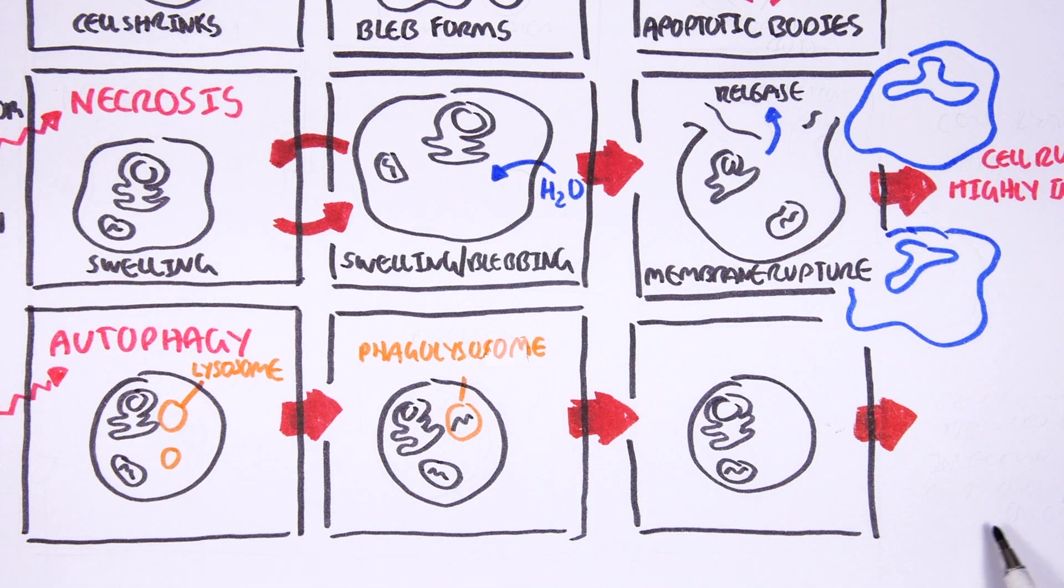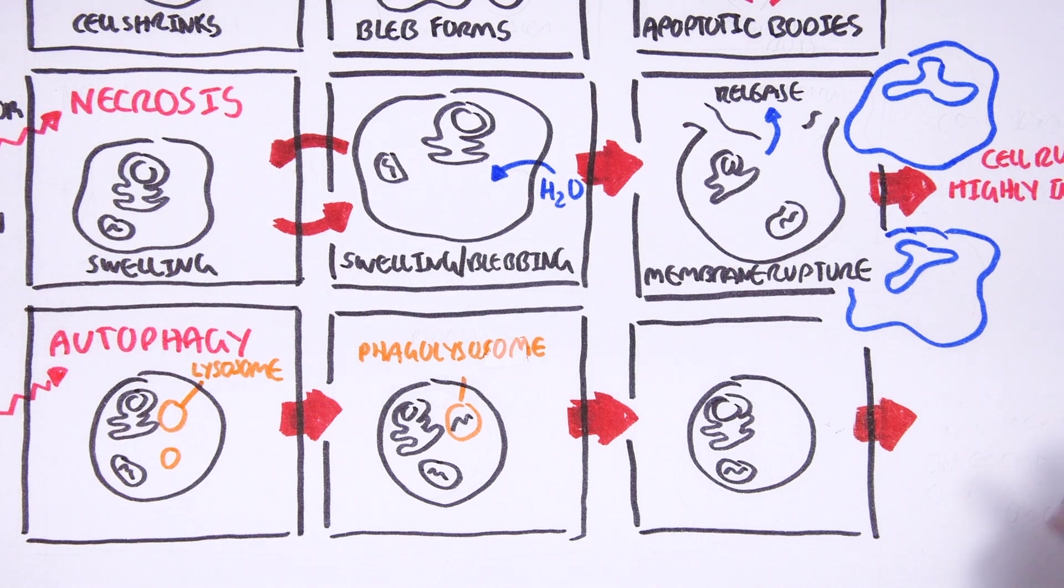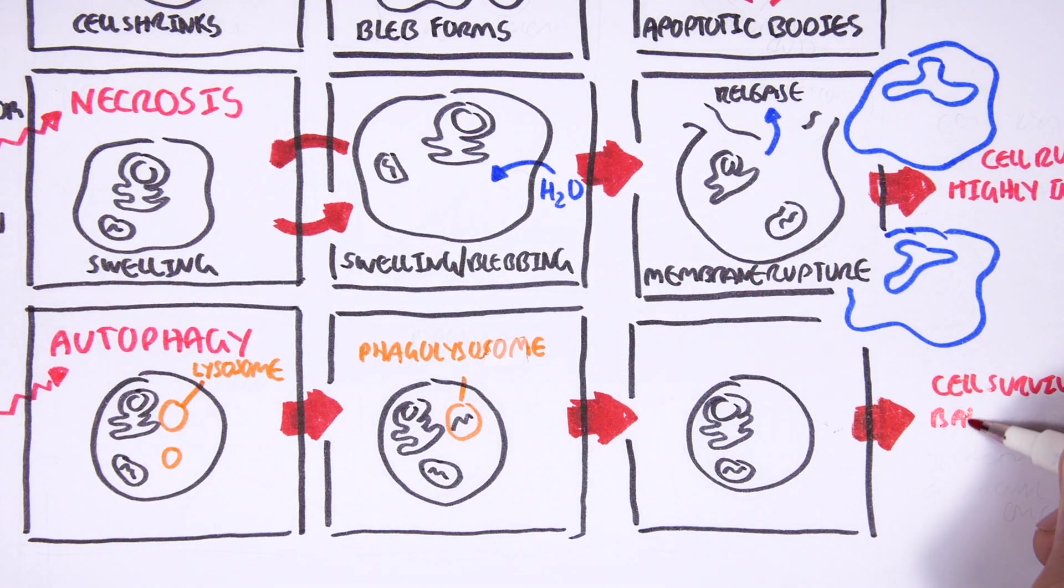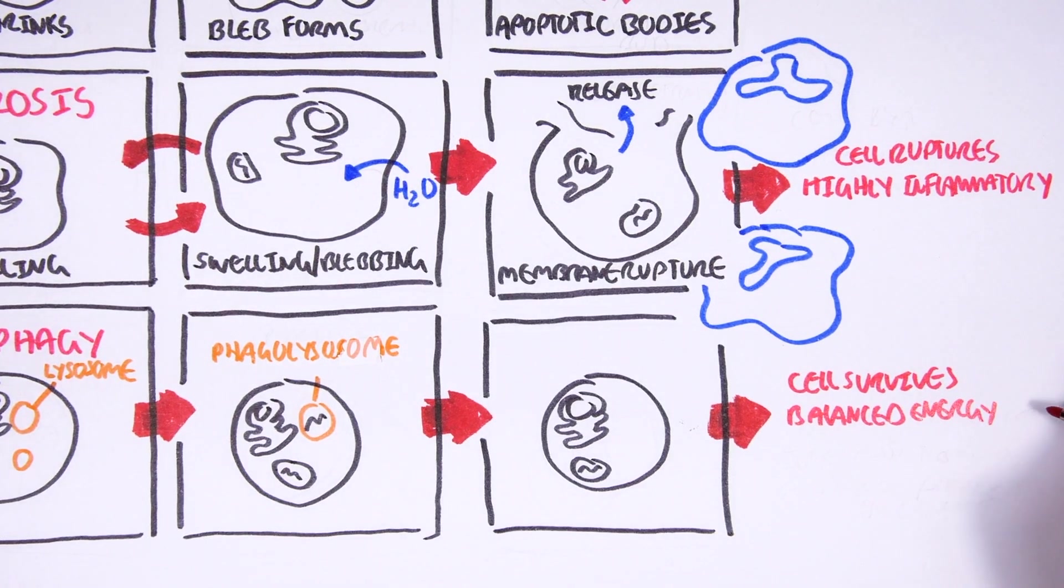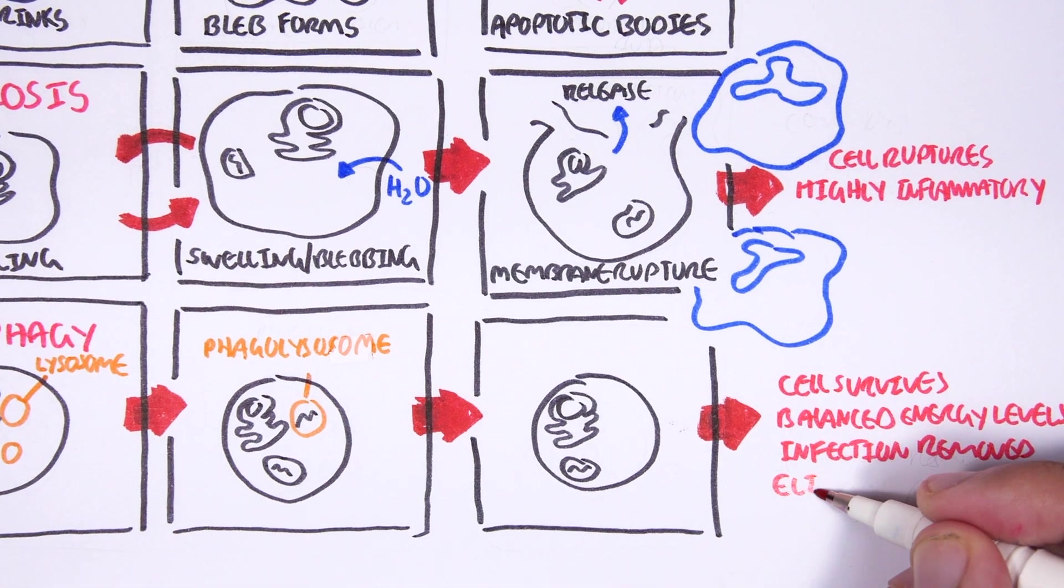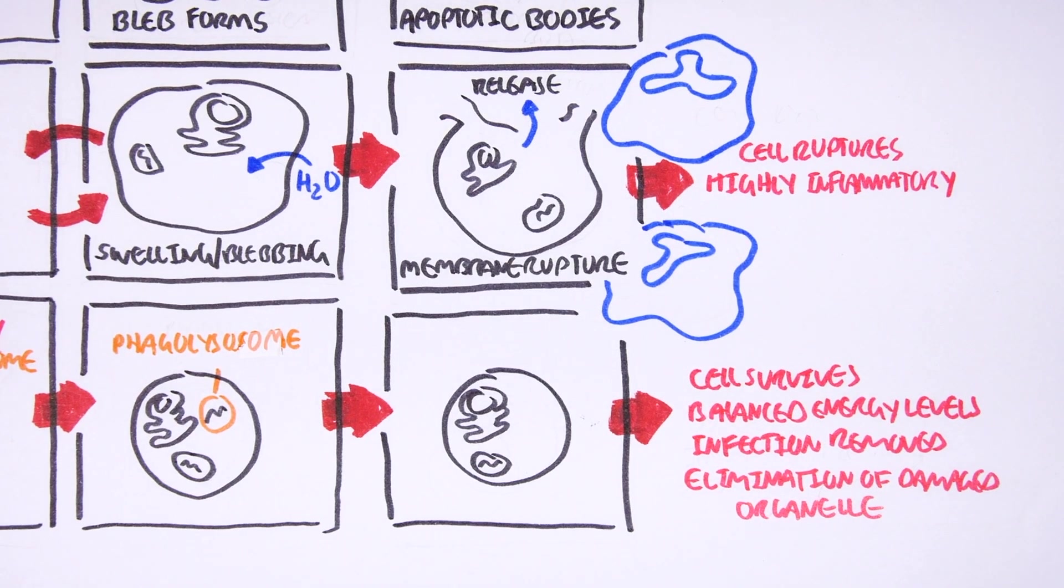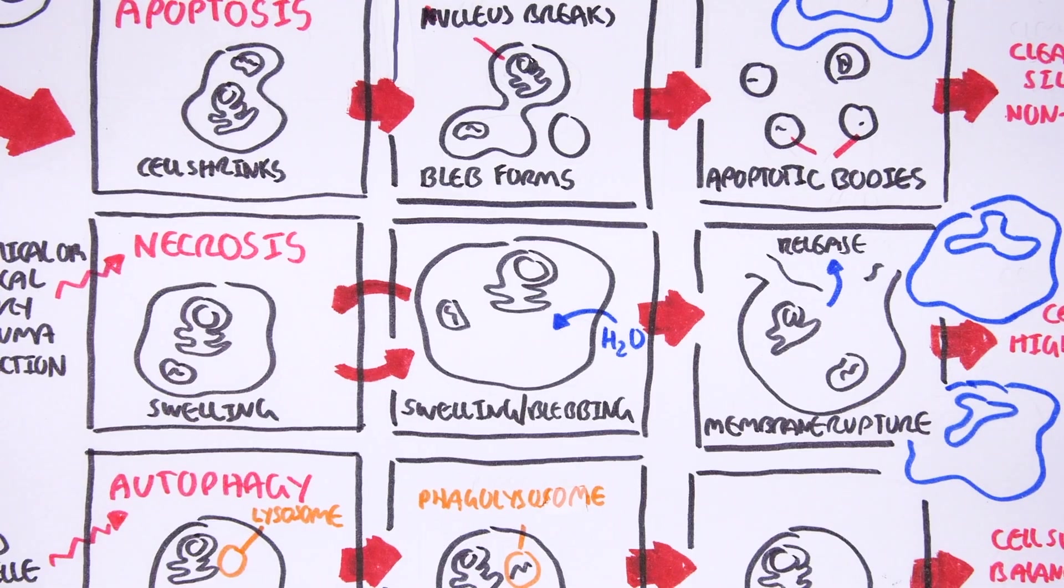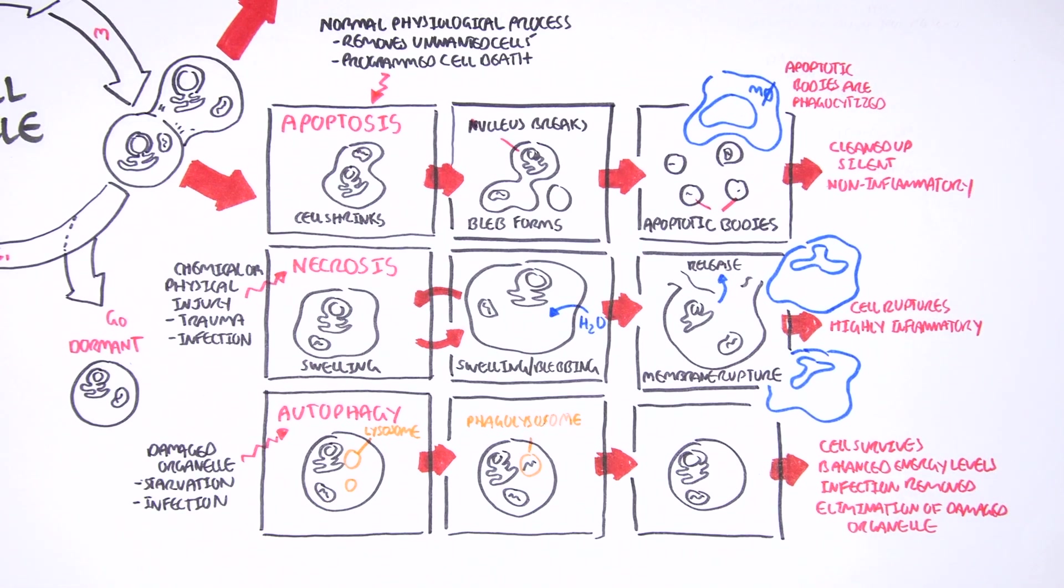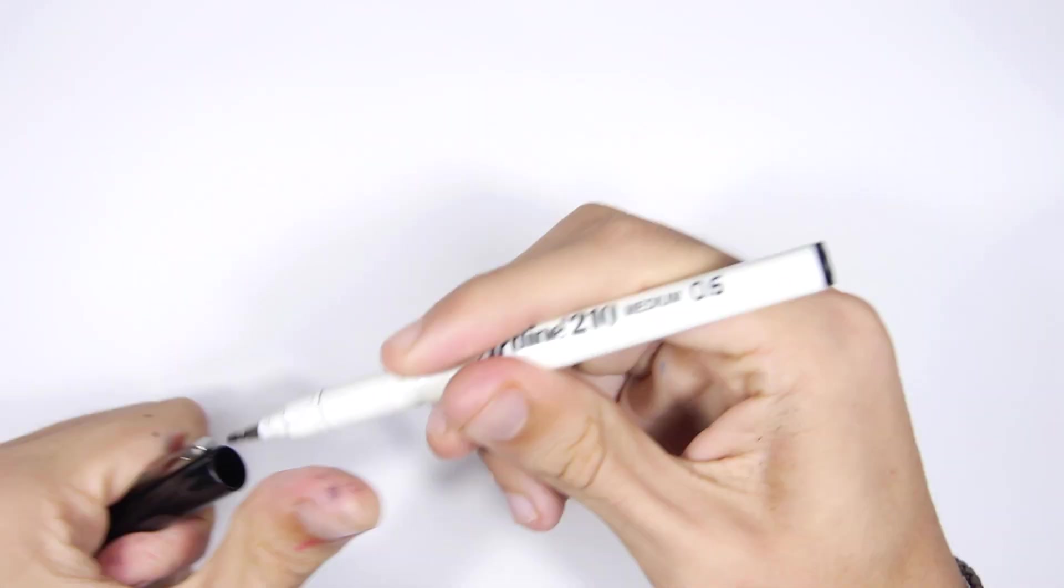And so through this mechanism, the cell will survive and will not need to undergo apoptosis. Its energy balance is maintained and it can remove the infection or it can eliminate the damaged organelles, whatever the case may be. So that was a brief overview of the fates of the cell. They can die either through apoptosis or necrosis, and they can undergo autophagy.